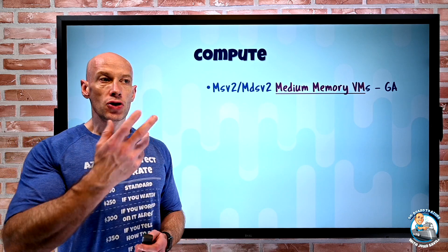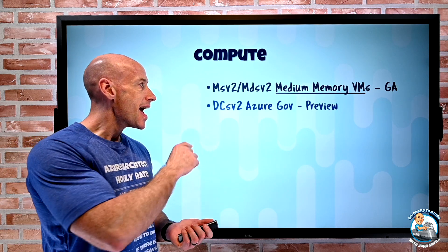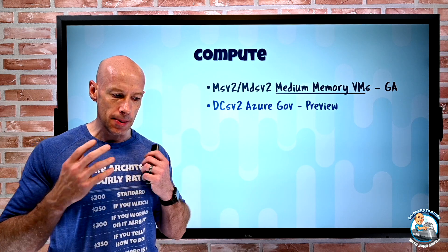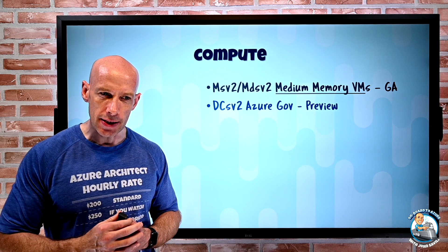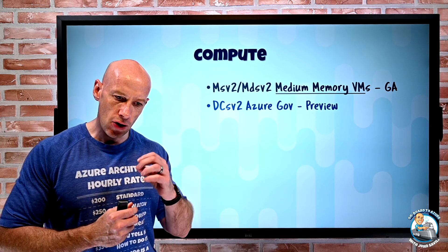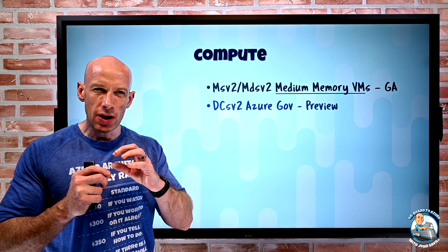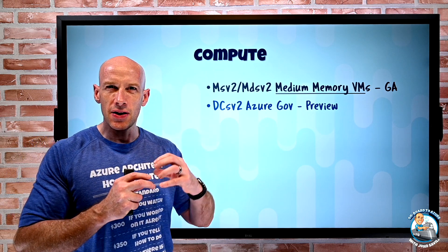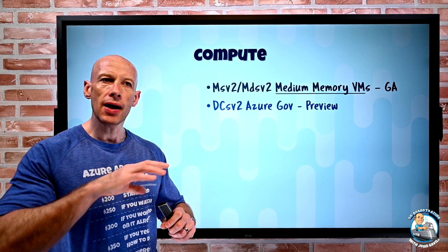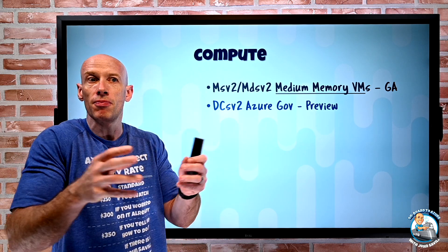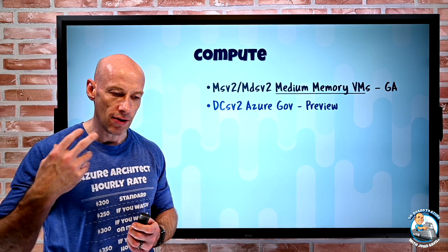Staying on virtual machines, for Azure Gov the DCSV2 are now in preview. These are the confidential computing virtual machines. They use the Intel Software Guard Extensions — SGX — which gives you those application-specific secure enclaves. I write my application to use those enclaves, and I can now have protection even from things in the kernel actually running on that virtual machine.